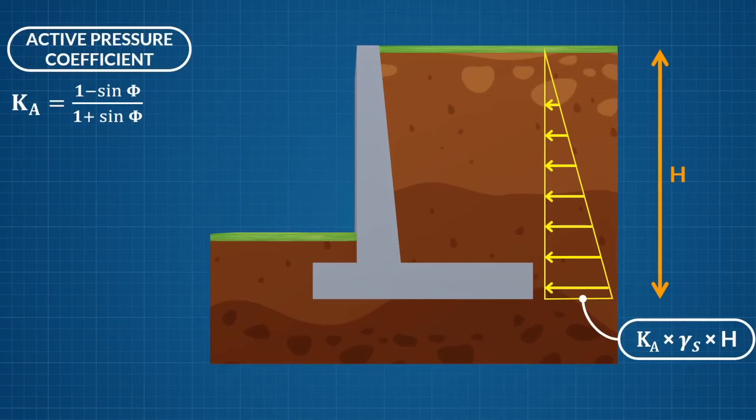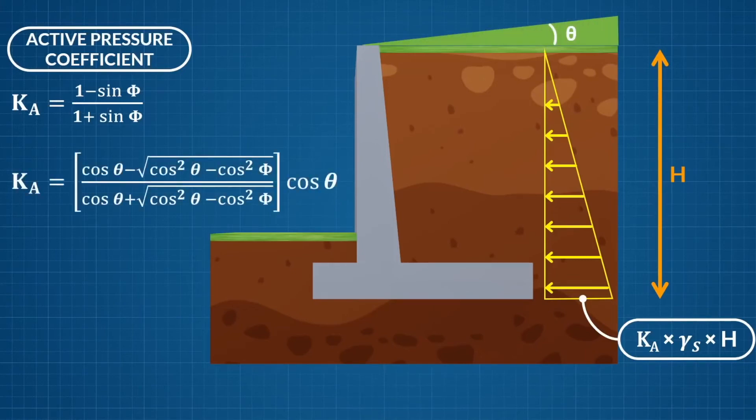When the backfill is sloping, the expression changes to this new equation, where the additional angle theta is the angle of inclination of the backfill.